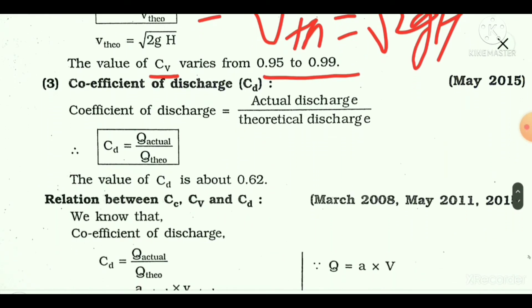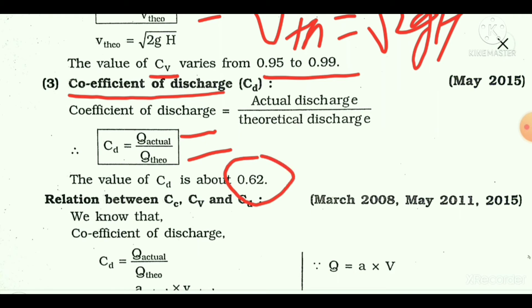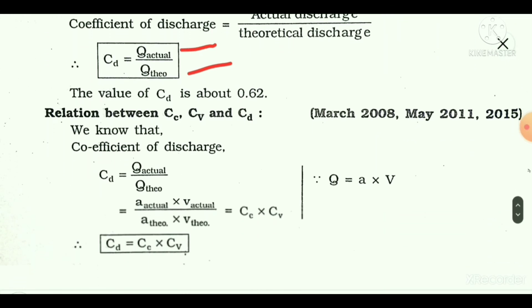Now we will talk about the coefficient of discharge. The coefficient of discharge is denoted by Cd. It is defined as the ratio of the actual discharge to the theoretical discharge, and the value of the coefficient of discharge is about 0.62.